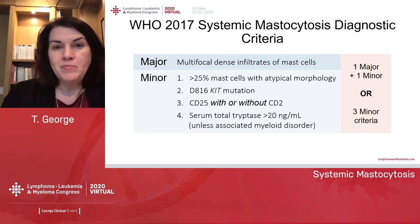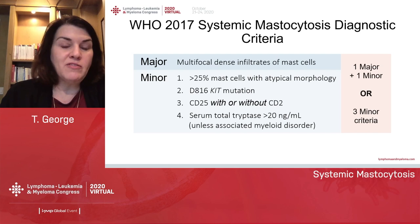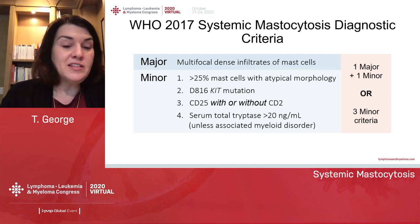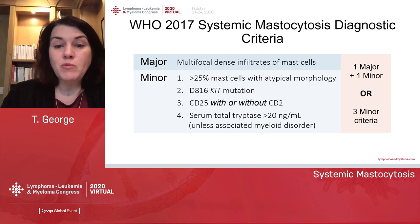The major diagnostic criteria for systemic mastocytosis require either one major criterion or at least three minor criteria — typically assessed on a bone marrow biopsy. You look for multifocal dense aggregates of mast cells, atypical morphology, the KIT-D816V mutation, aberrant expression with CD25 with or without CD2, and increased serum total tryptase — unless there's another associated myeloid disorder, which can also elevate serum tryptase.